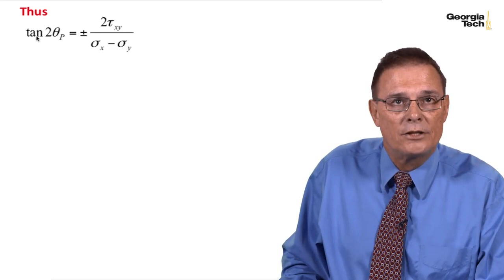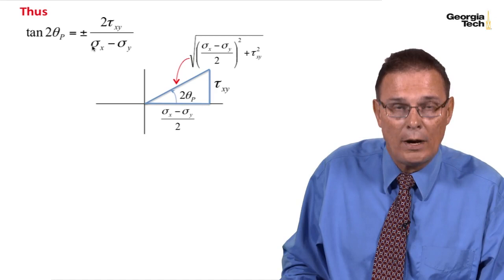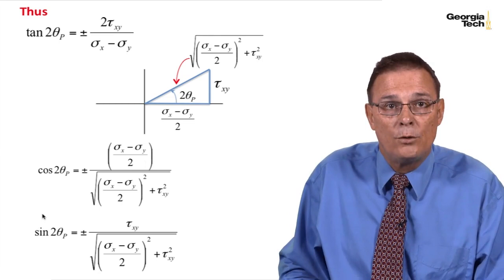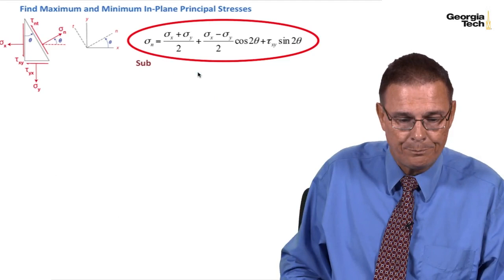Okay, so here is our relationship for tangent 2 theta sub p and it can be plus or minus this value. Here it is shown graphically. And so by trigonometry we can find the expression for cosine which is the adjacent side over the hypotenuse, or the sine of 2 theta sub p which is the opposite side over the hypotenuse.